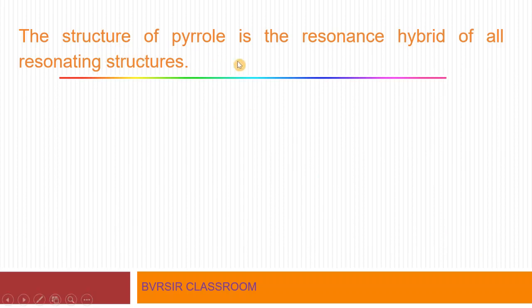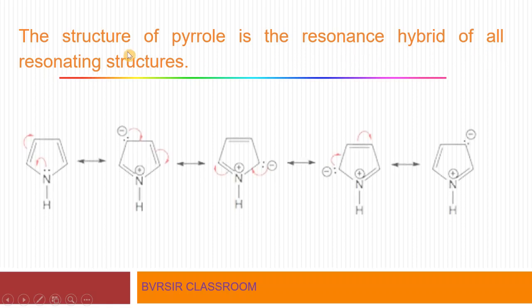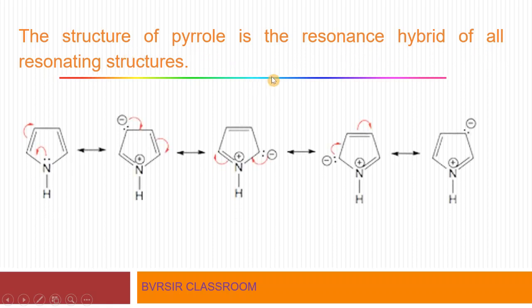The structure of pyrrole is the resonance hybrid of all its resonance structures. In pyrrole, nitrogen is the heteroatom and on this nitrogen atom there is a lone pair of electrons. This lone pair has the ability to migrate to adjacent carbon bonds. This constitutes charge transfer — the electrons shift, giving a negative charge on the adjacent carbon, while nitrogen acquires a positive charge.